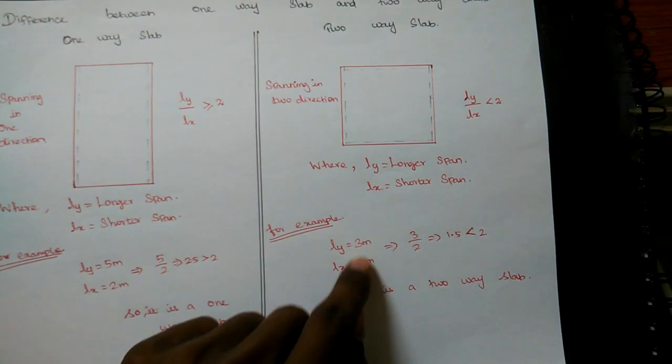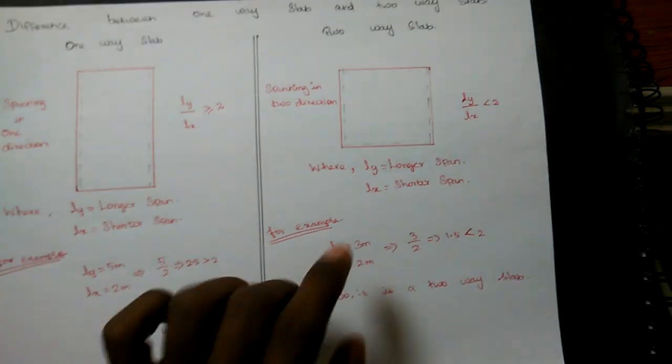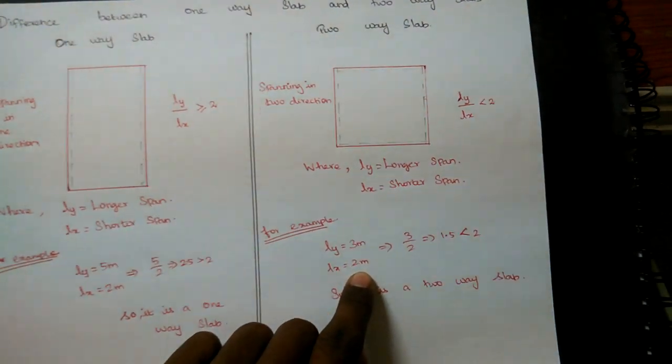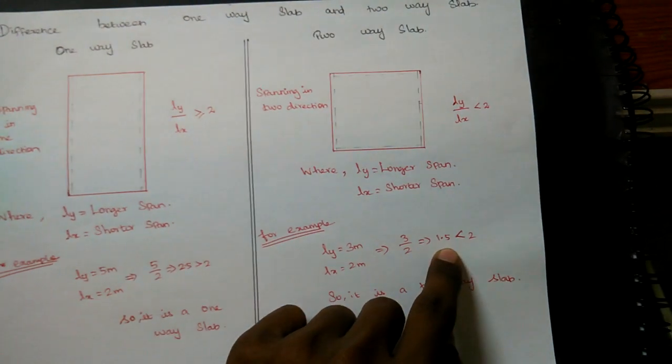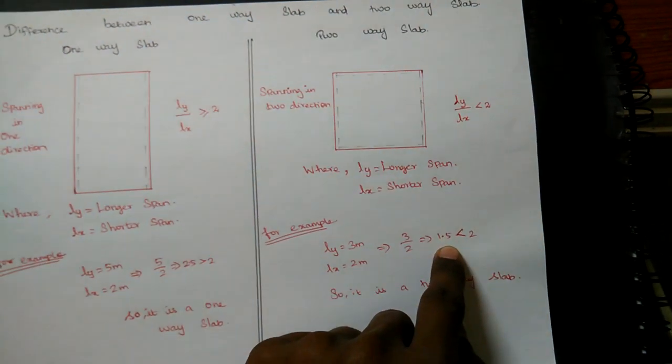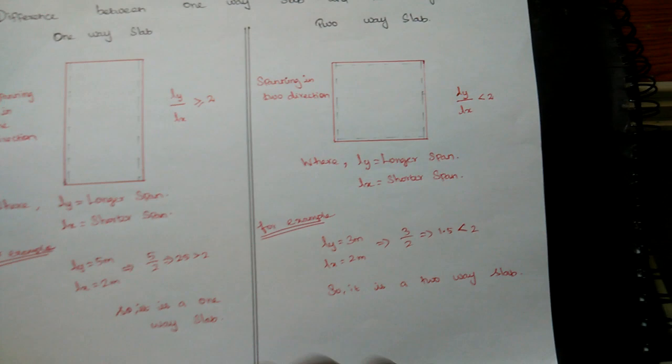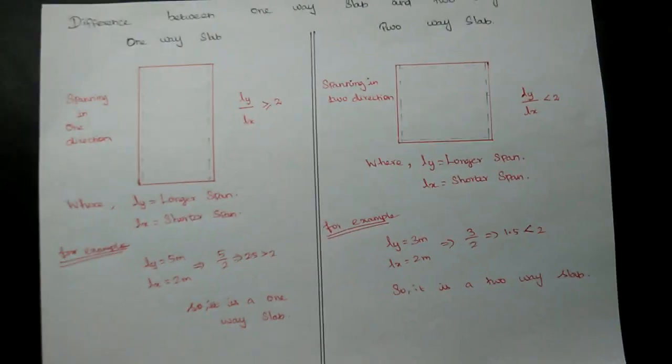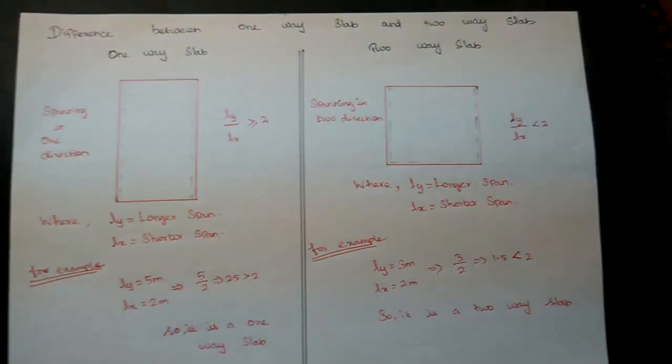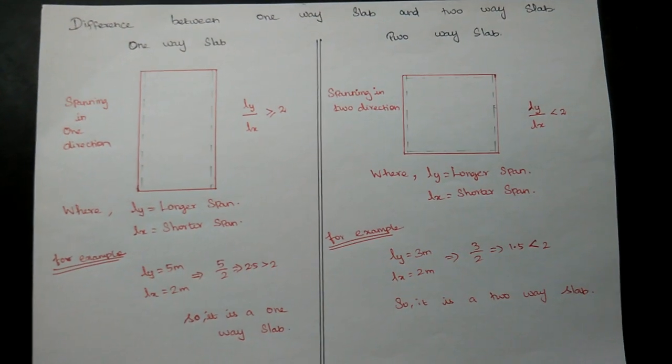If you have a question, say Ly is 3 meters and Lx is 2 meters. So 3 by 2 equals 1.5. The answer is 1.5, which is less than 2. So this is a Two-Way Slab. This is a very easy method.